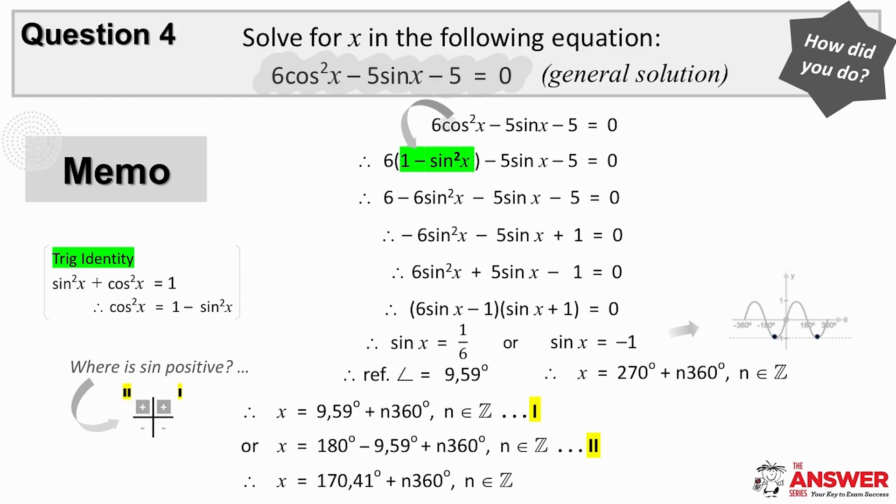And so we look to see if there are any trig identities we can apply in order to factorize. If we replace cos squared with 1 minus sine squared, then we have an expression in sine on the left hand side, which when simplified is a trinomial. Imagine 6a squared plus 5a minus 1, where a is sine x.